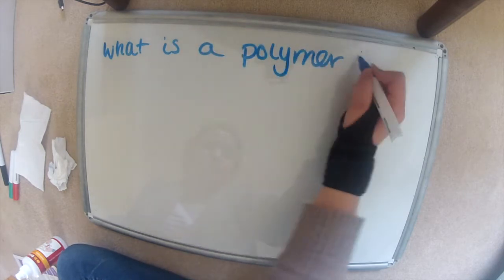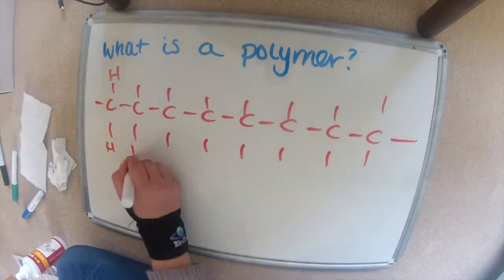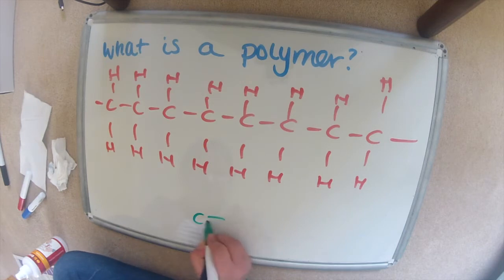So what is a polymer? A polymer is a large molecule made by linking together repeat units of smaller units called monomers. So the red thing here is the polymer and the green thing is the monomer.